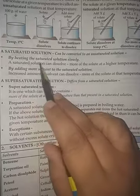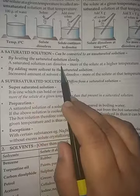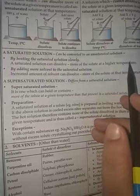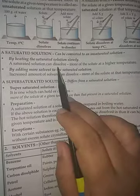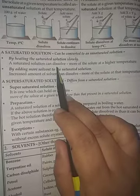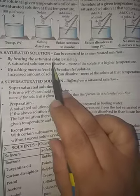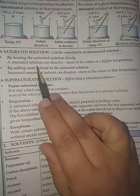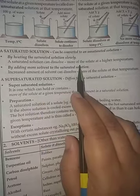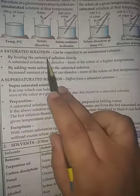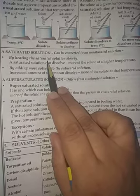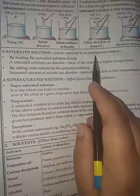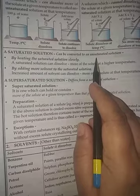By heating the saturated solution slowly, it can dissolve more of the solute at a higher temperature. On increasing the temperature, the saturated solution dissolves the excess sugar, and at the elevated temperature that saturated solution has become an unsaturated solution.